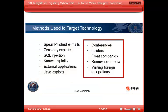What kind of methods are they using? On the right-hand side is more of the non-technical stuff — the human factor — that are still attack vectors for cyber incidents or intrusions: conferences, insiders, disgruntled employees, front companies, removable media, thumb drives, and even visiting foreign delegations in terms of intelligence collection. These are all traditional attack vectors for reconnaissance and gaining intelligence, because there's a lot of information you can get out of someone at a conference about their network or where the data the bad guy wants really resides.